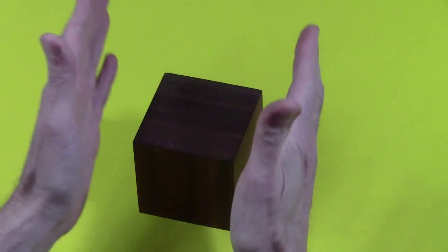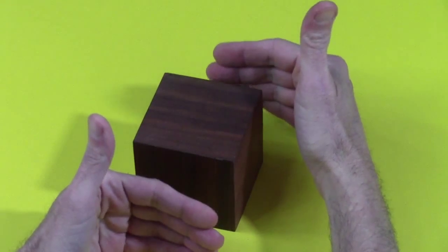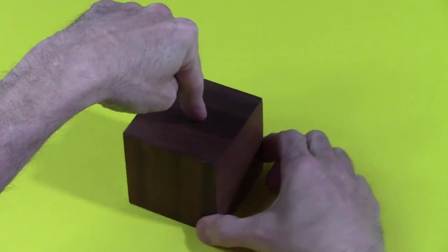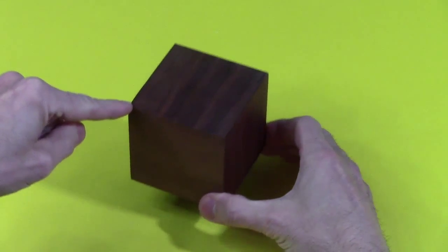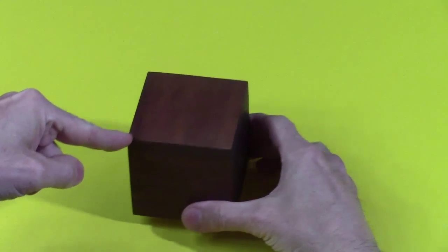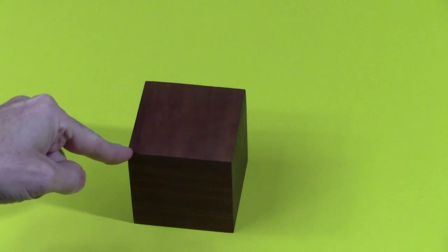The trick to getting it right is to visualize the cube. Think of its 4-fold rotational symmetry around the center of each face, and 3-fold rotational symmetry around the long diagonal. You have to assemble the cards in a way that creates that symmetry.